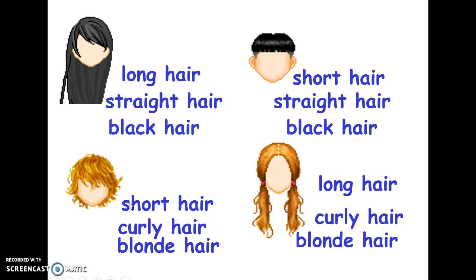Now we have another example. This person has short hair. Curly means the shape of the hair - curly hair. Blonde hair is the color of the hair. Long curly blonde hair: long hair, curly hair - the shape, and blonde hair - the color. So we can say she has long hair, he has short hair, he has curly hair, she has blonde hair.